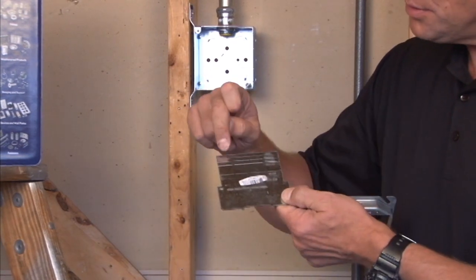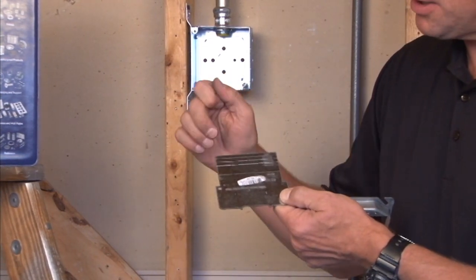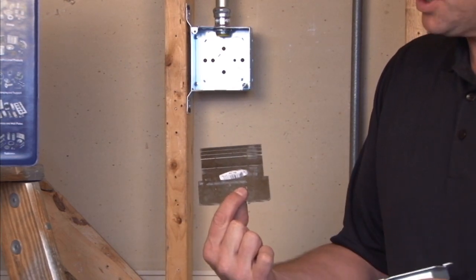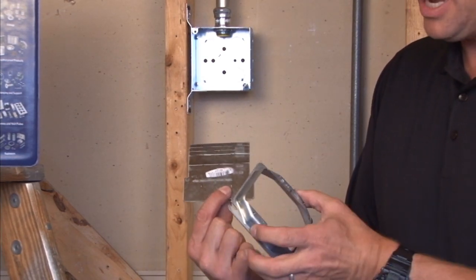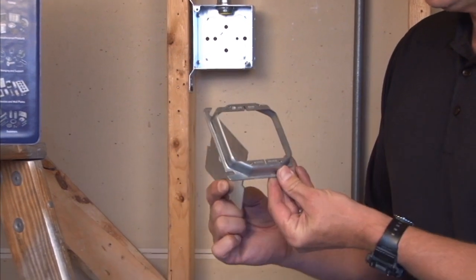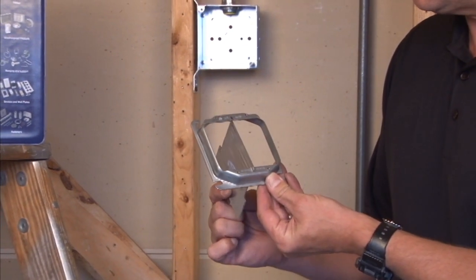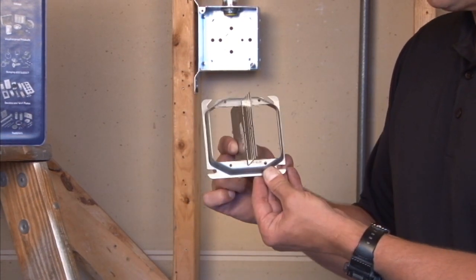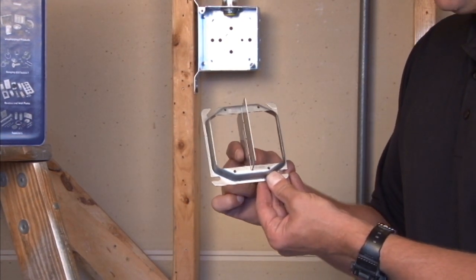They come with break off tabs for the desired plaster ring that's going to be attached. The easiest way to install this particular product is to take your two gang plaster ring and to slide the partition through the slot prior to installing the ring on the box.